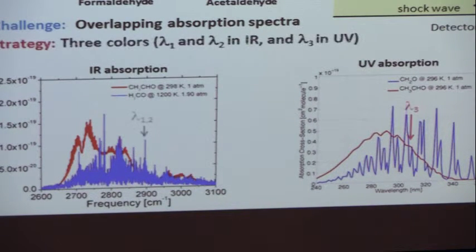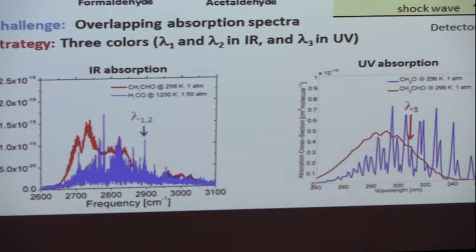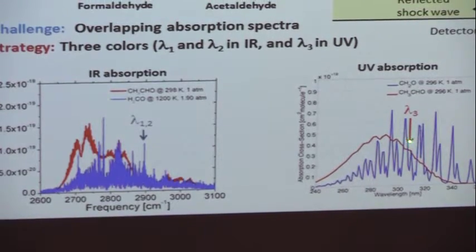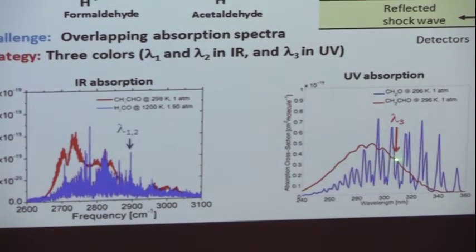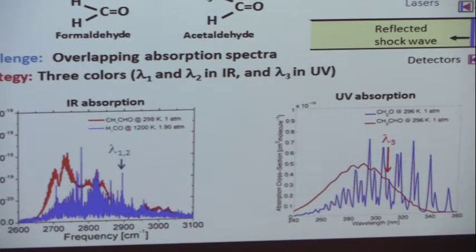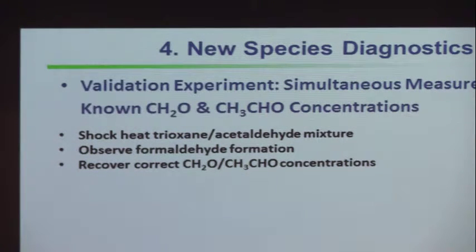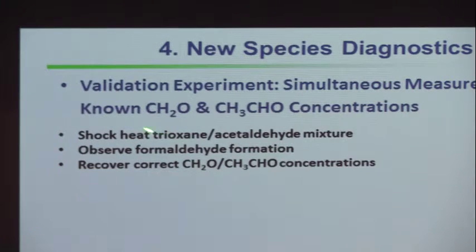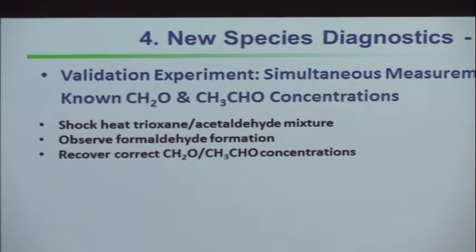We can take advantage of this difference and pick colors strategically. We'll use a color that's on the peak of a formaldehyde line, as well as one just on the edge where formaldehyde is low and acetaldehyde is nearly the same. Then we go into the UV and pick one dominated by acetaldehyde. We use three wavelengths to sort out two species. We can check ourselves by doing experiments with trioxane — a molecule that gives us three formaldehydes — mixed with acetaldehyde.